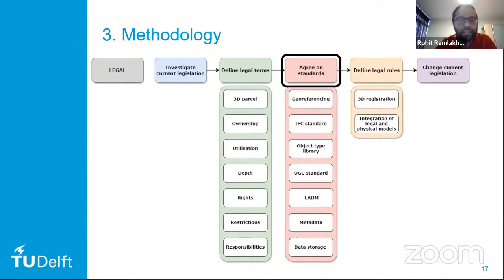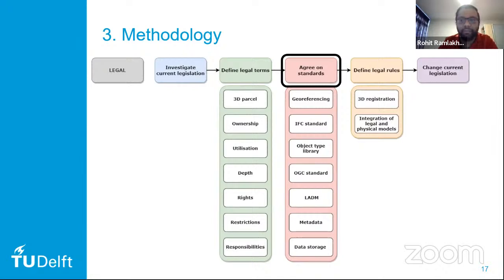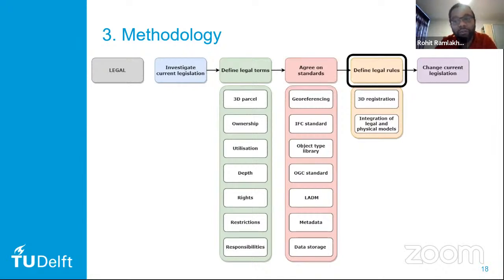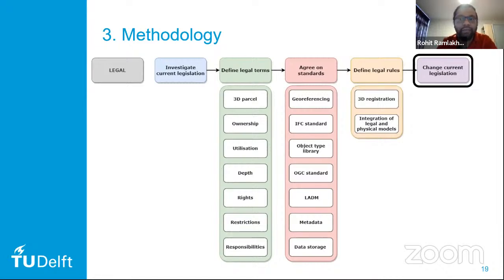Then you need to agree on standards with regards to geo-referencing — which model to use, whether to use the IFC standard, what type of objects will be registered in the object type library, the LADM standard, metadata standard, data store standards, et cetera. After this, you define the legal rules stating that the 3D registration of objects needs to be mandated through law, and the integration of the legal and physical model also needs to be mandated. Then you have to change the current legislation to implement all these changes.